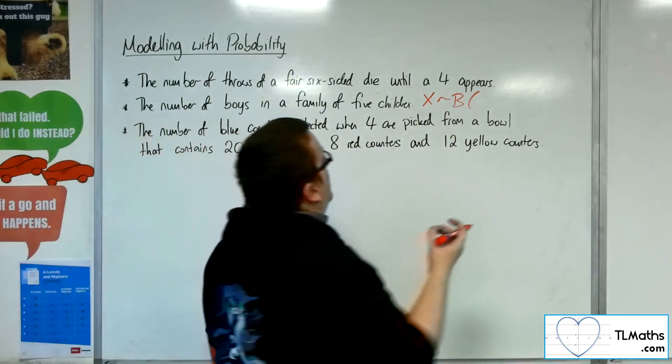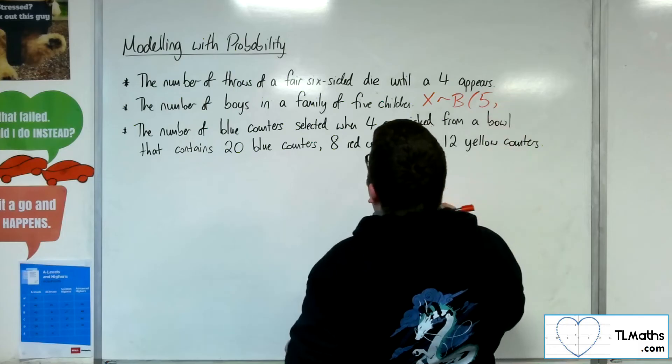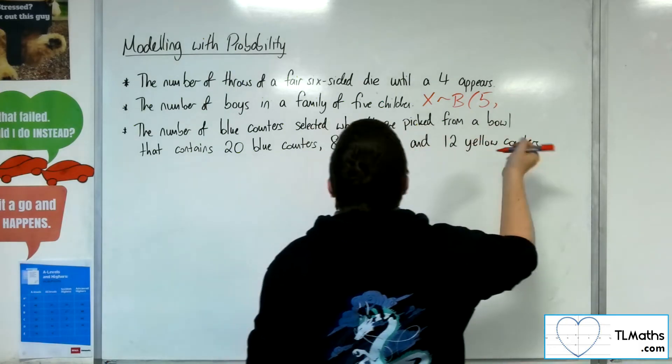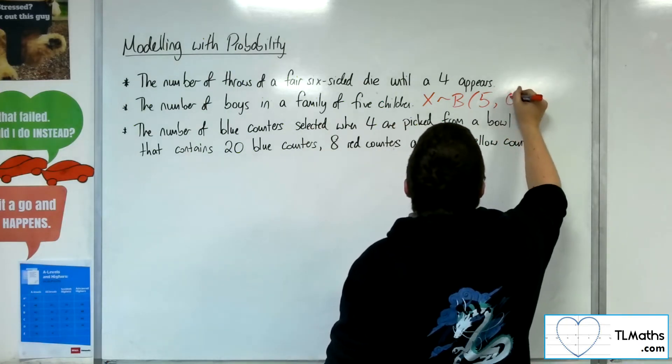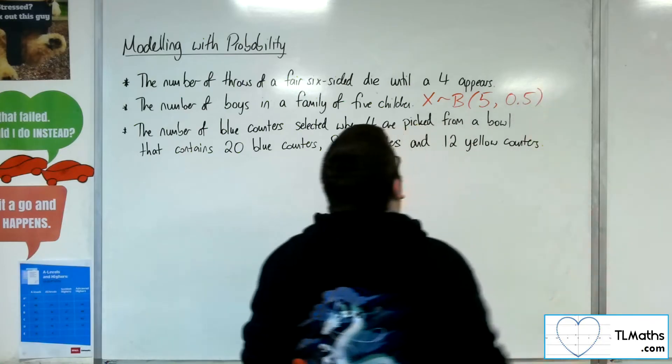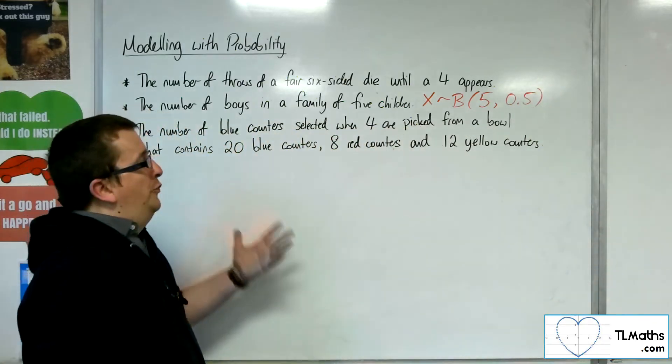So what we could then say is we could model this using a binomial distribution where we've got a fixed number of children, five, and the probability of getting a boy will be one half, so 0.5. That's how we could model that situation.